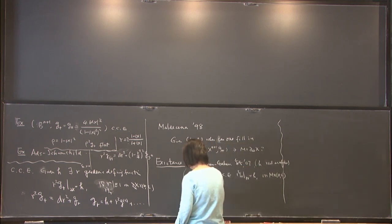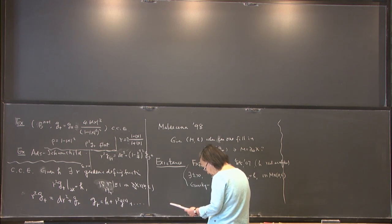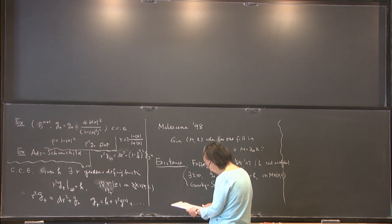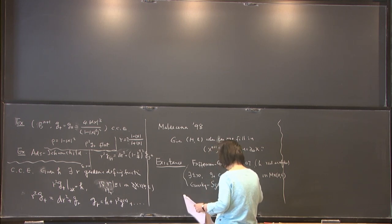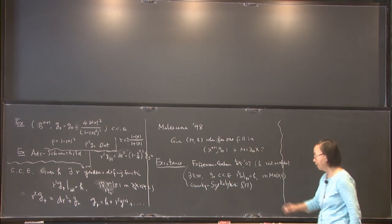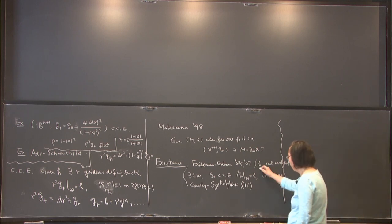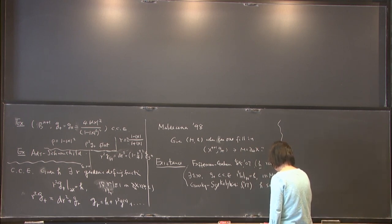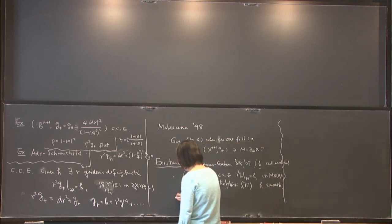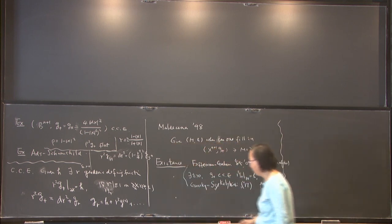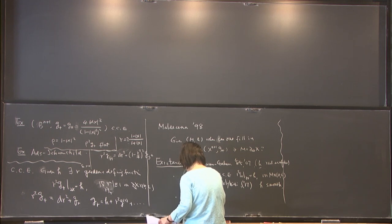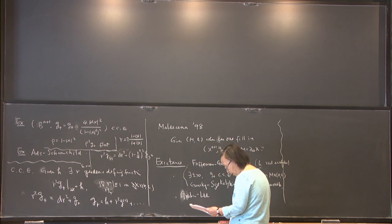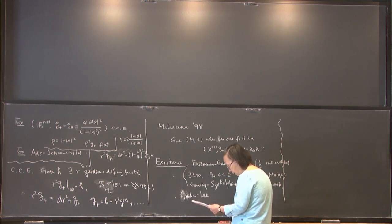This work has been extended by Gursky and Sektnan-Kivy to the smooth case, without the real analytic assumption. There is another concrete existence result by Graham and Lee from 1991. They show that in a neighborhood of the standard sphere with its canonical metric, if h is in a C-infinity neighborhood of the standard metric, then one can conformally fill in.